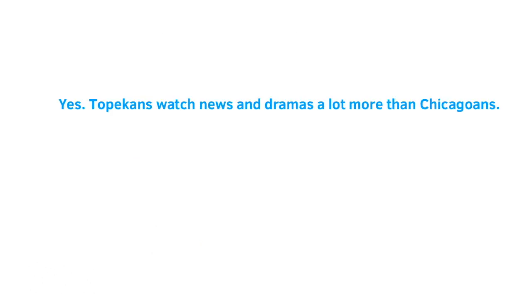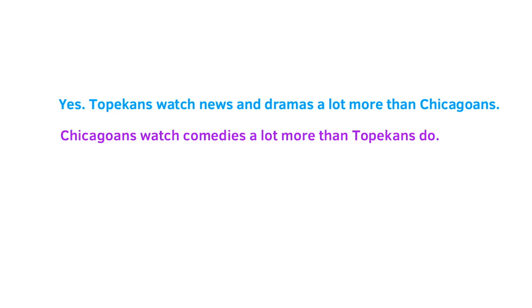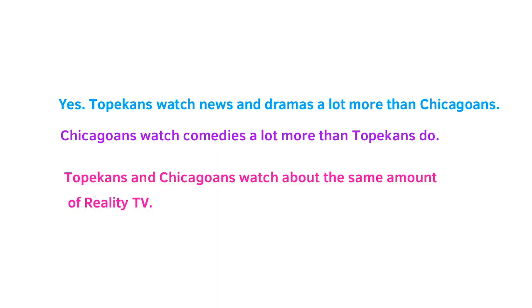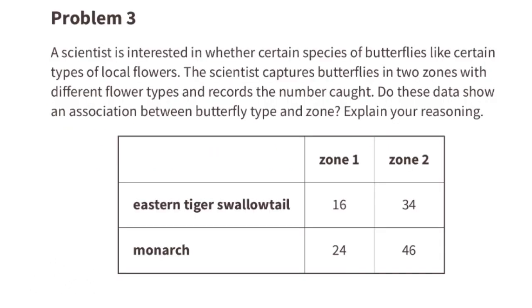Since there are differences, the answer is yes: Topekans watch news and dramas a lot more than Chicagoans, Chicagoans watch comedies a lot more than Topekans, and Topekans and Chicagoans watch about the same amount of reality TV.